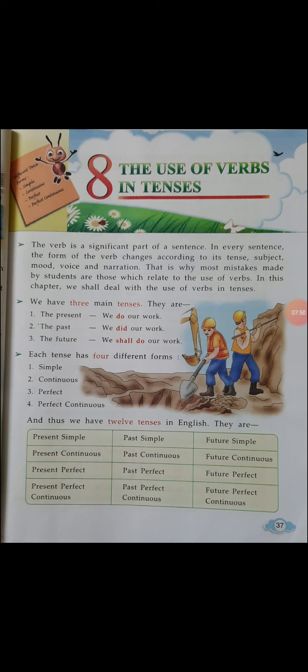In our next class, from piece number 38, we will discuss present simple, past simple, and future simple. To summarize: we actually have 3 tenses — present, past, and future — and each has 4 forms: simple, continuous, perfect, and perfect continuous, giving us 12 tenses altogether.